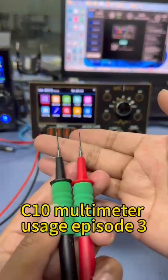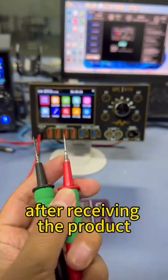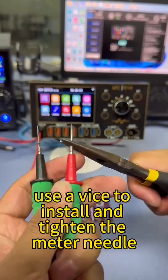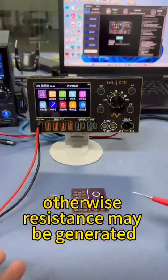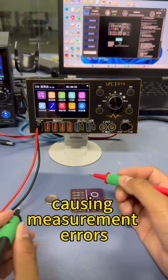C10 multimeter usage episode 3. After receiving the product, use a vise to install and tighten the meter needle. Otherwise resistance may be generated, causing measurement errors.